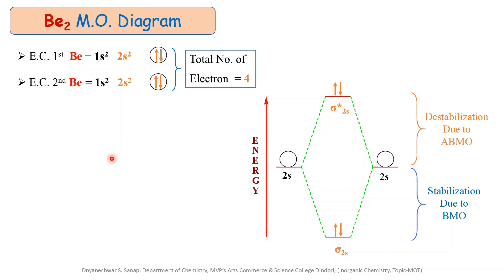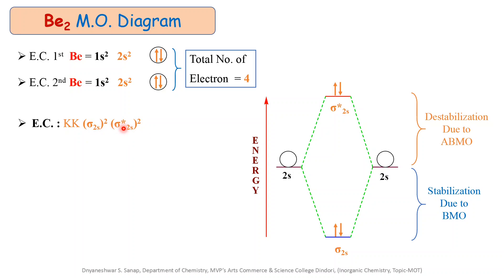Next is writing the electronic configuration for the molecular orbitals of Be2. We write the capital letter K twice for the 1s electrons of both atoms, since they are present in the K shell. After that, the electronic configuration is written as KK(σ2s)²(σ*2s)². There are two electrons in the bonding molecular orbital and two electrons in the anti-bonding molecular orbital.